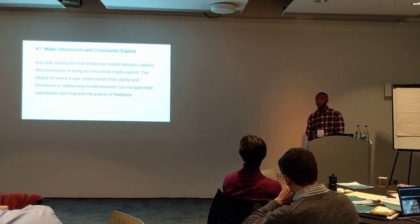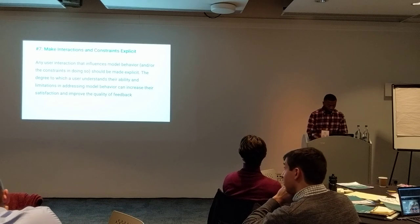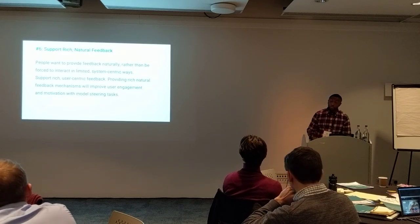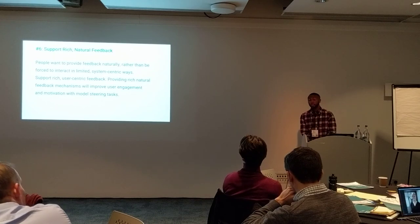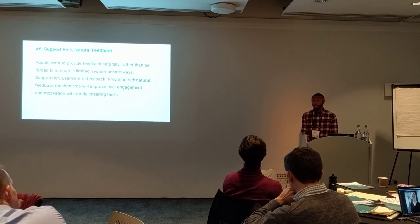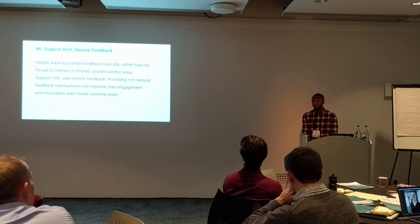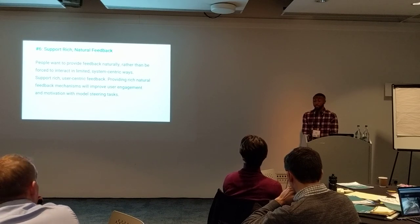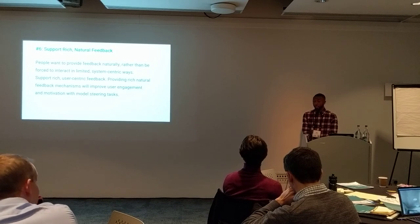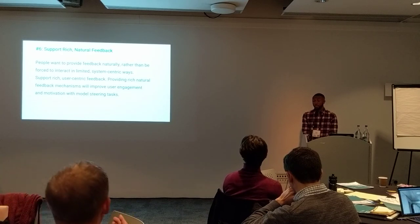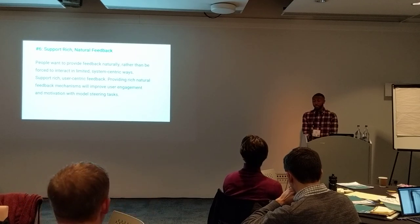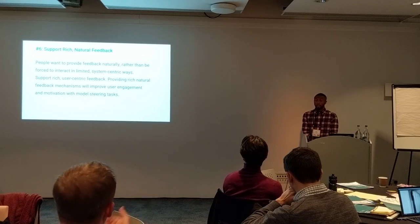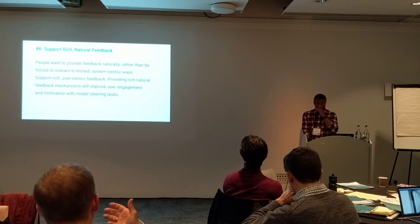Follow-up on heuristic six: there's a problem with the word 'feedback' because originally feedback referred to what the system gives to the user, but here it's vice versa — feedback from the user to the model. It's important to be careful with the wording and meaning of feedback in this context. Schneider's original definition was that feedback is what the system provides to you as a human being, not what you provide to the machine learning algorithm to improve it, such as improving the policy.